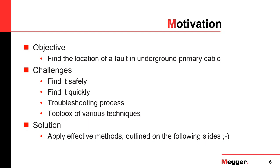Let's start with the motivation for cable fault location. When there is a fault happening in the field, the objective is to find the fault and then take appropriate measures. The problem is it is not a straightforward process — you are typically under pressure. You have to find it quickly, but you also have to find it safely. Nobody should be harmed. It is more a troubleshooting process, and for this troubleshooting process, there is no single method that applies to everything. You have to work with a toolbox of various techniques, and the trick is to apply the one method that works.